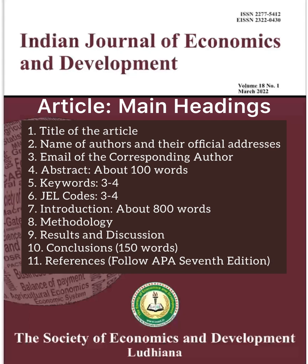Number 1: title of the article. Number 2: name of the authors and their official addresses. Number 3: email of the corresponding author. Number 4: abstract about 100 words — never cite any reference in the abstract, it should be based on your findings. Keywords: 3 to 4. JEL code: 3 to 4. Introduction: about 800 words, supplemented with the existing literature, and at the end give the main objectives.